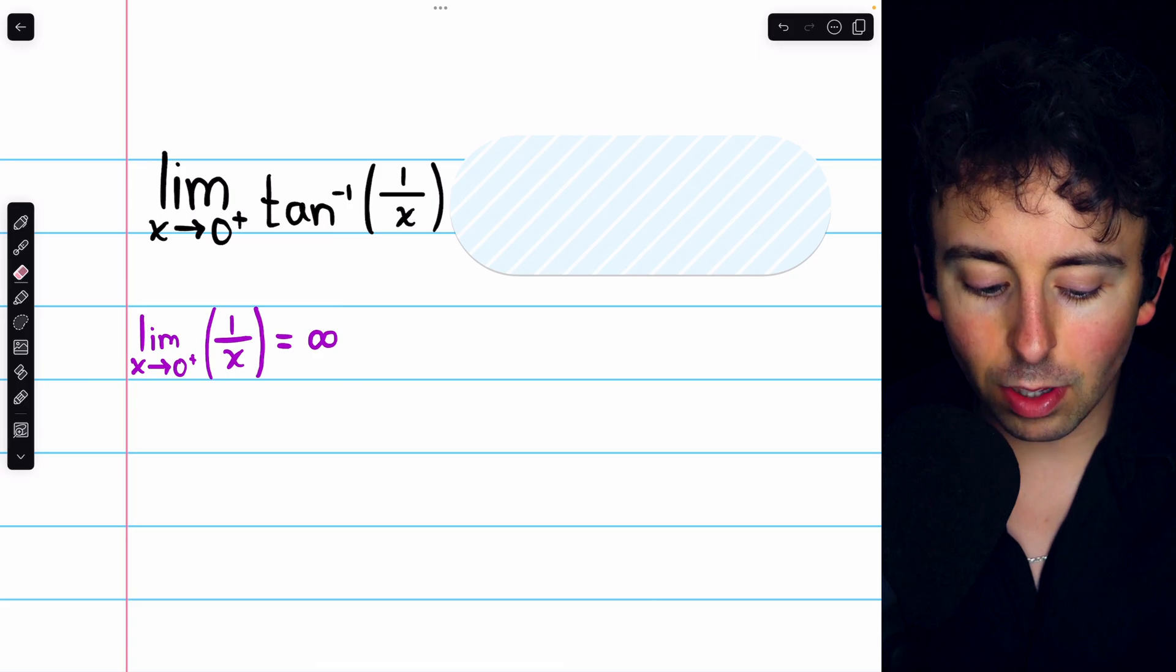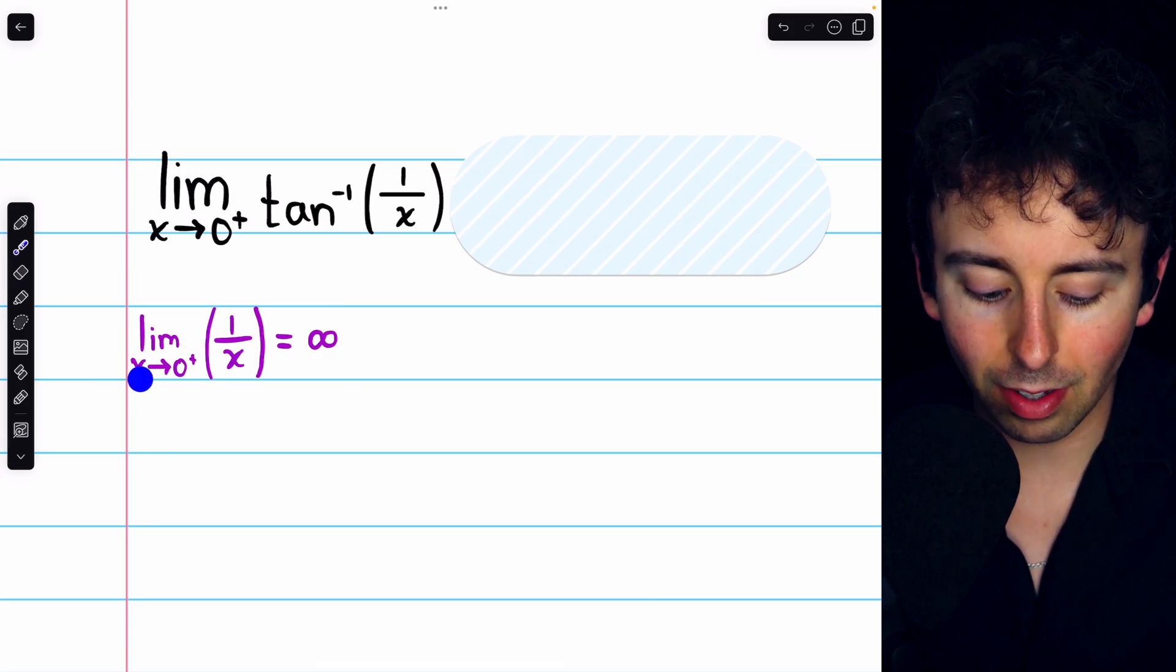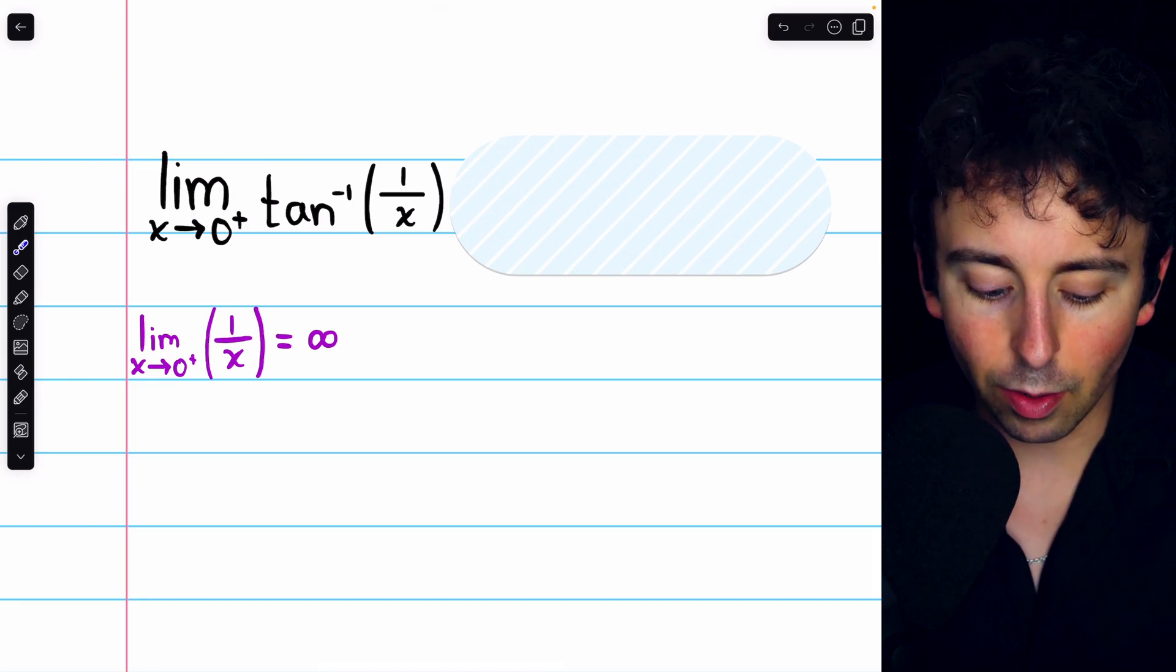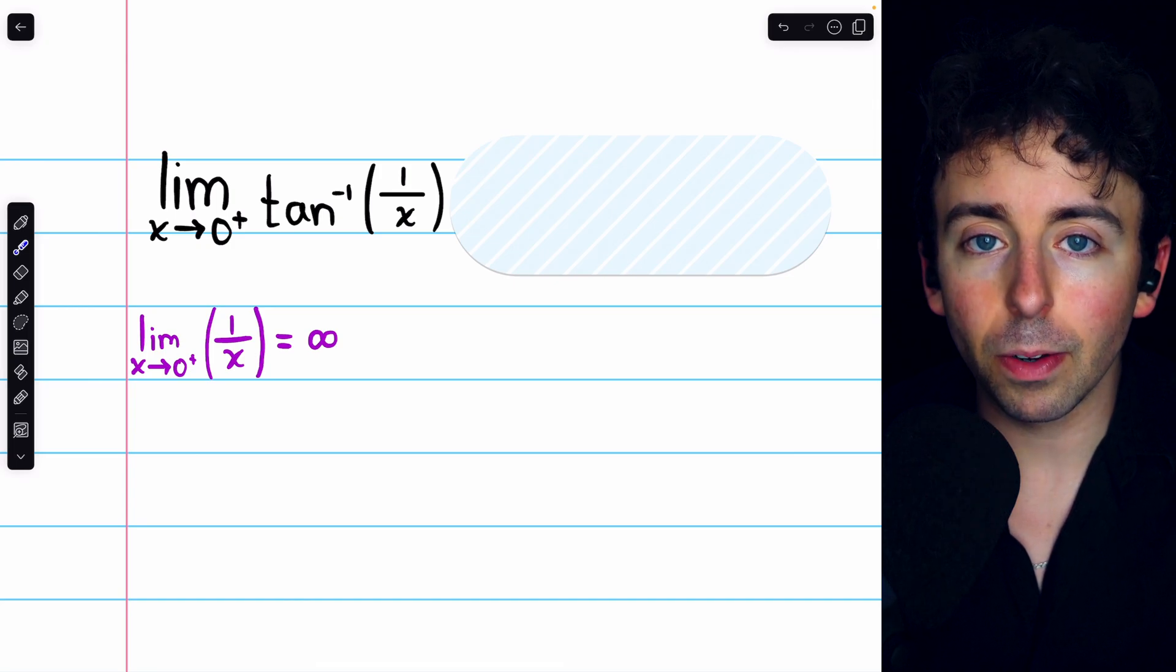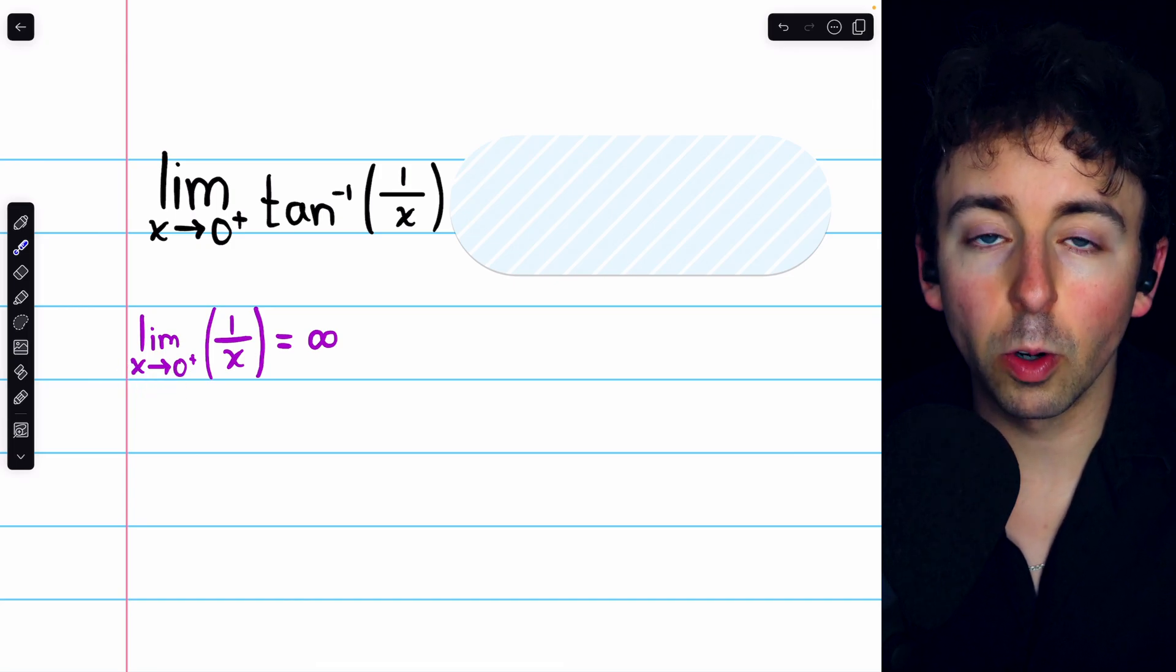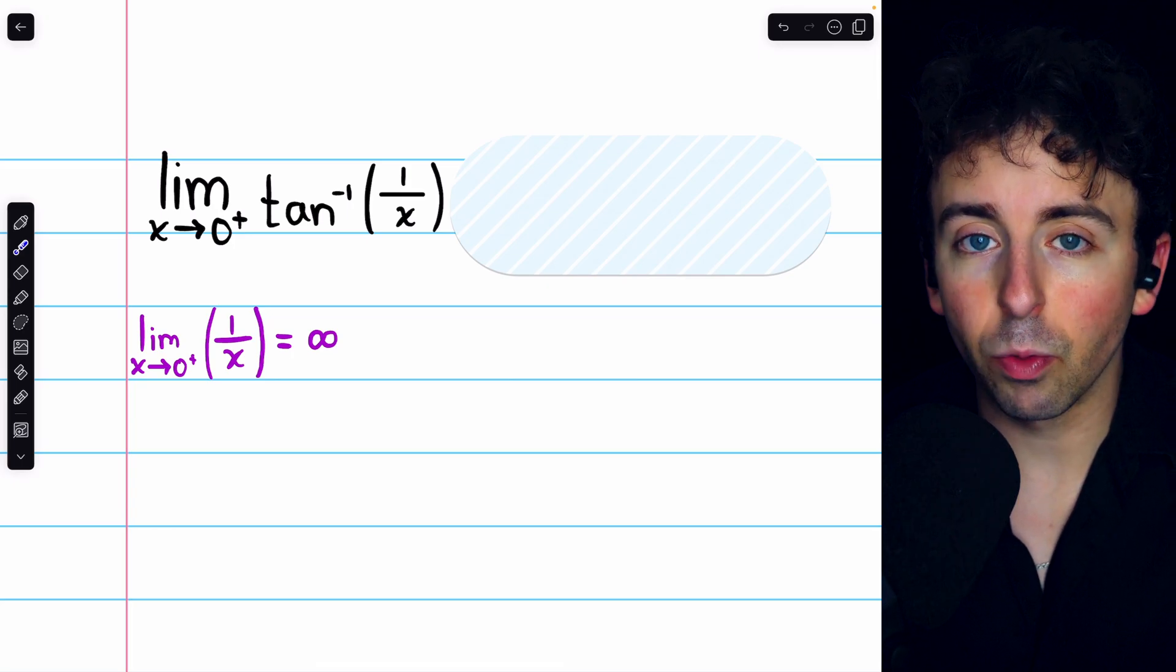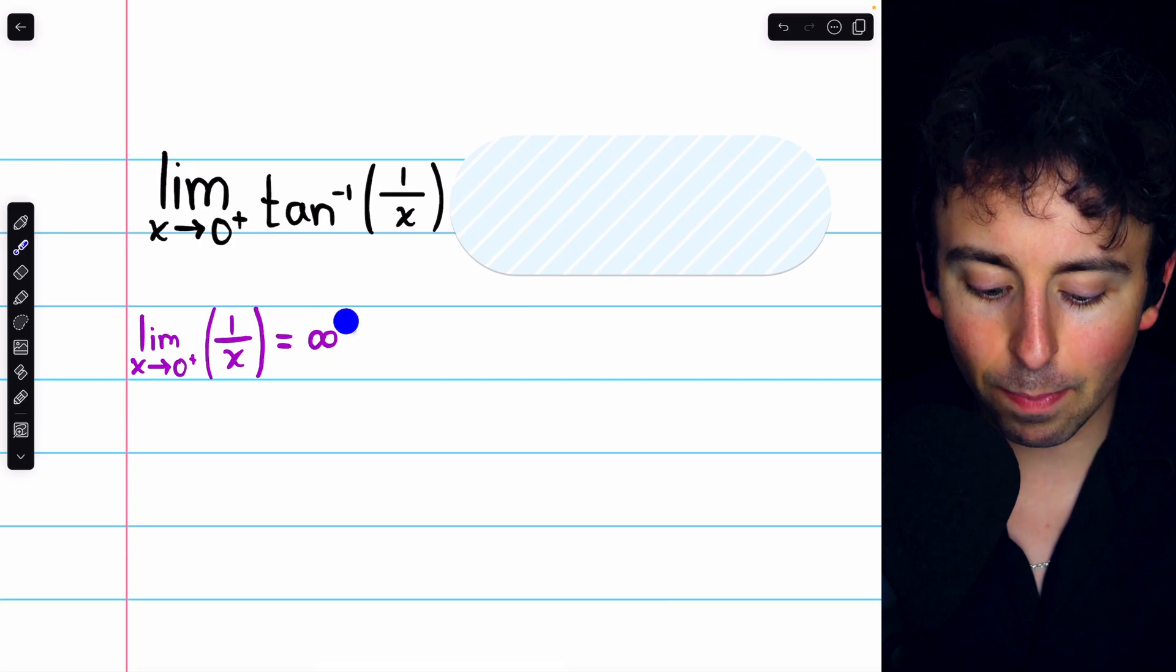So we consider the limit of that input function 1 over x. What is its behavior as x approaches 0 from the right? Well, it's just 1 divided by a really small positive number. If x is approaching 0 from the right, then it's very small and positive. So we have 1 divided by those small positive numbers, which is a really big positive number.